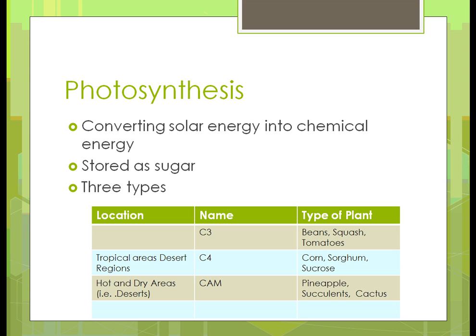In most areas you're going to see C3 — examples include bean, squash, and tomatoes, though there could be others. But in tropical areas and desert regions, you're going to see C4 and CAM. When it's hot and dry, you'll see more CAM; when it's tropical — hot but also wet — you'll see C4. For example, in Hawaii you'll have succulents and pineapple, and in the desert Southwest — Arizona, New Mexico — you'll see a lot of cactus and succulents, because the sun is converted through photosynthesis into different types of energy suited to their climate.